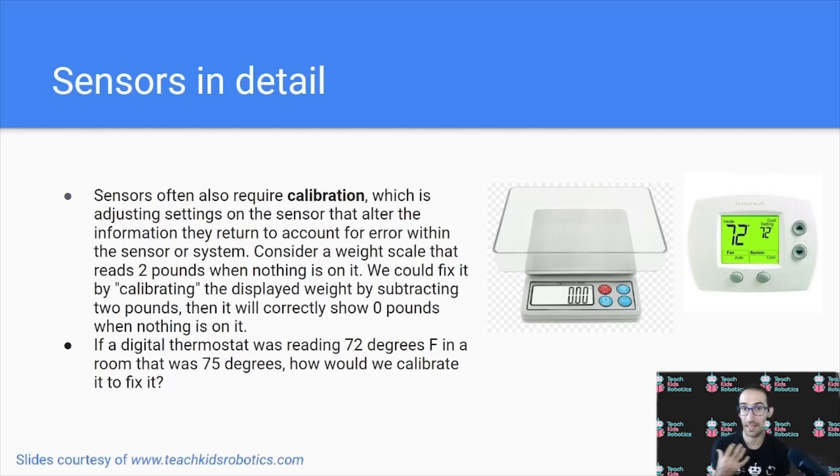Sensors often require calibration, which is when the sensor is reading a value that differs from the actual value in the real world. Consider a weight scale that reads two pounds when nothing is on it. We would need to calibrate this by subtracting two pounds from all readings so it correctly shows zero when nothing is on it. Consider a digital thermostat reading 72 degrees when we know it's 75 degrees outside. We would increase the thermostat's reading by three degrees. Sensor calibration is often done in robotics since sensors may be slightly off as they're manufactured with slightly different mechanical components, so we calibrate them to provide accurate readings based on the environment around them.